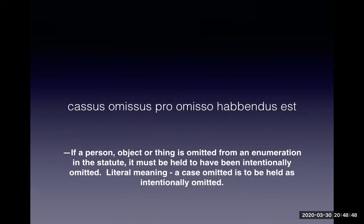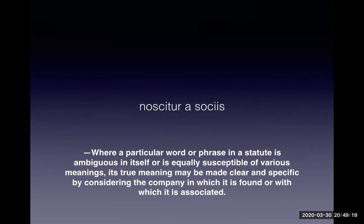Next, casus omissus pro omisso habendus est, which means that a case omitted is to be held as intentionally omitted — a thing or person omitted from an enumeration in the statute must be held to have been intentionally omitted. You can check out other provisions of the New Civil Code as well. Moving on, we have noscitur a sociis, which means that where a particular word or phrase in a statute is ambiguous in itself or equally susceptible of various meanings, its true meaning may be made clear and specific by considering the company in which it is found or with which it is associated. You can look into Article 420 of the Civil Code as an example.